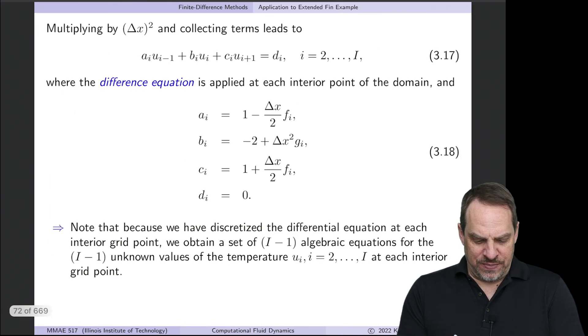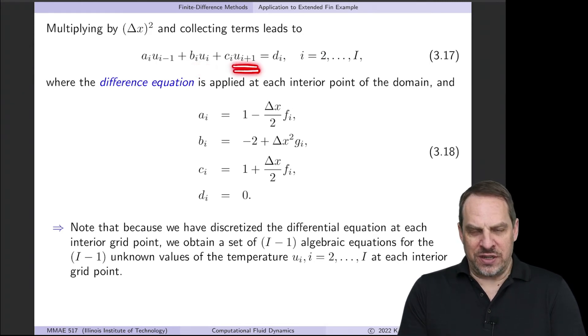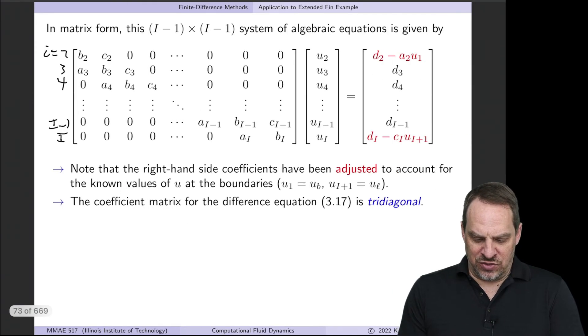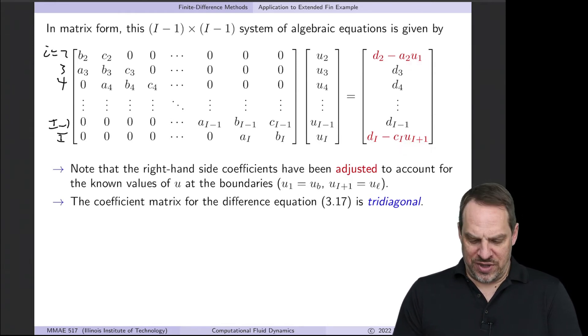Similarly, on the right side, when i is capital I, the next point to the right is capital I plus 1. That's the right boundary. We know that value as well. That's u sub capital I plus 1, u sub l. This is ub, and this is u sub l. So I've taken all the known stuff over onto the right-hand side, as we always do. And all the unknown stuff stays on the left.